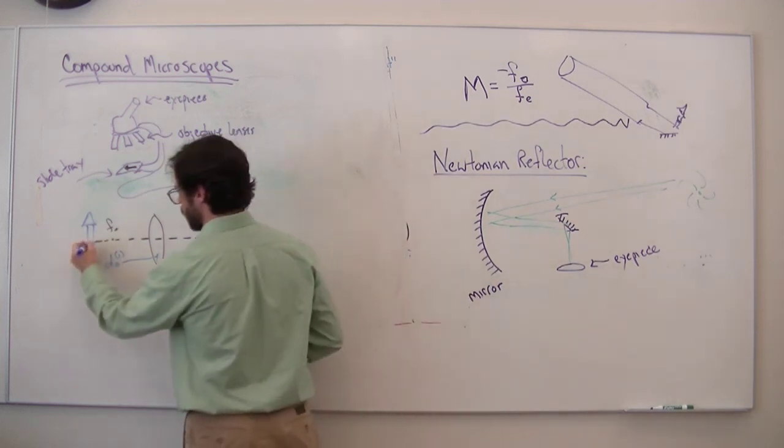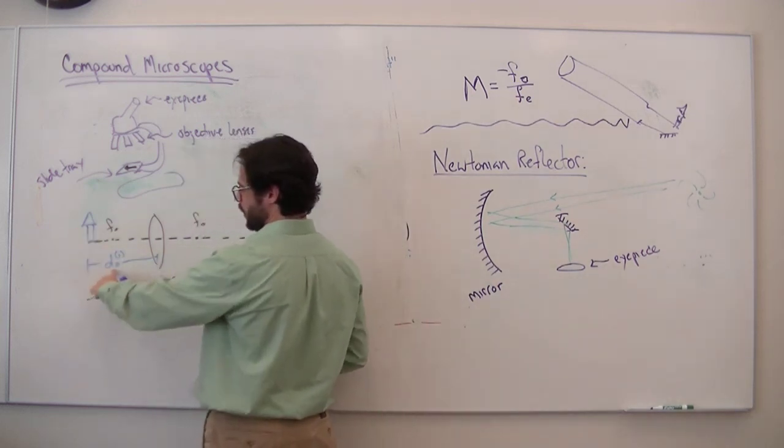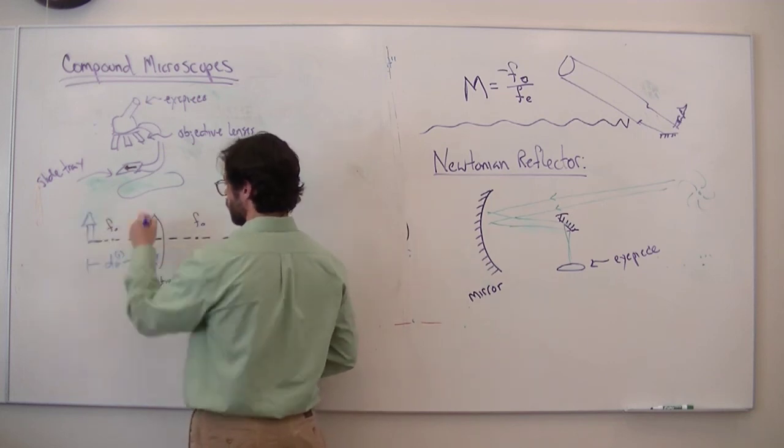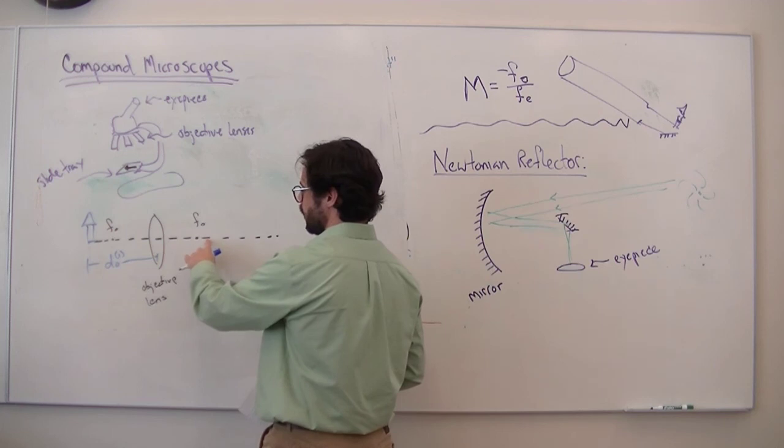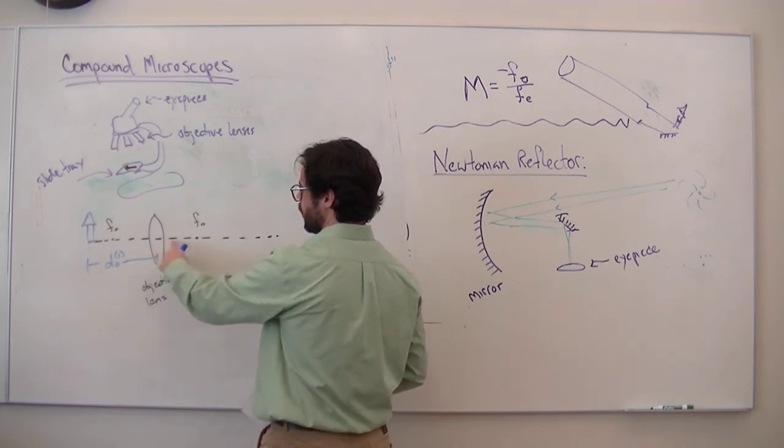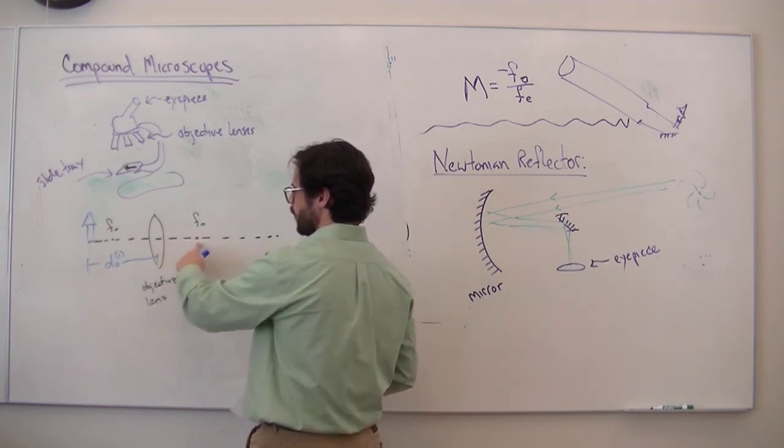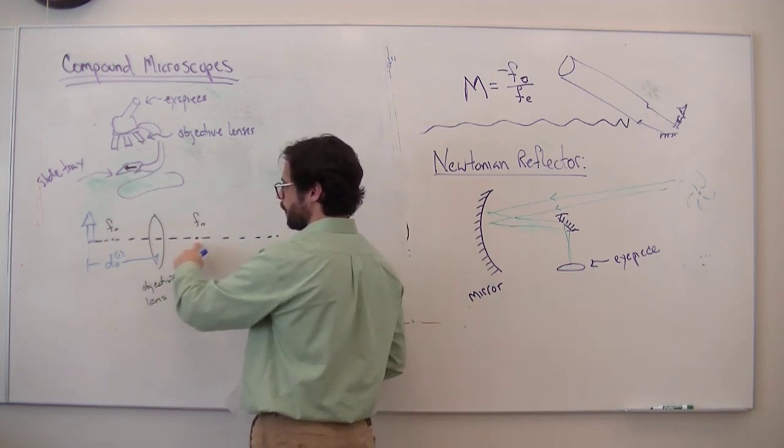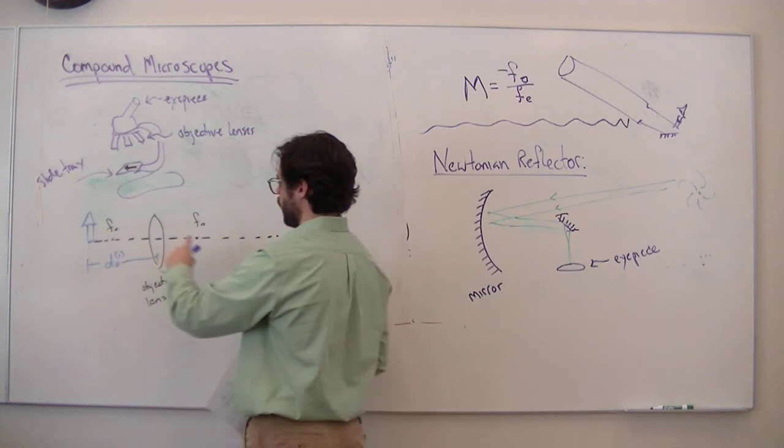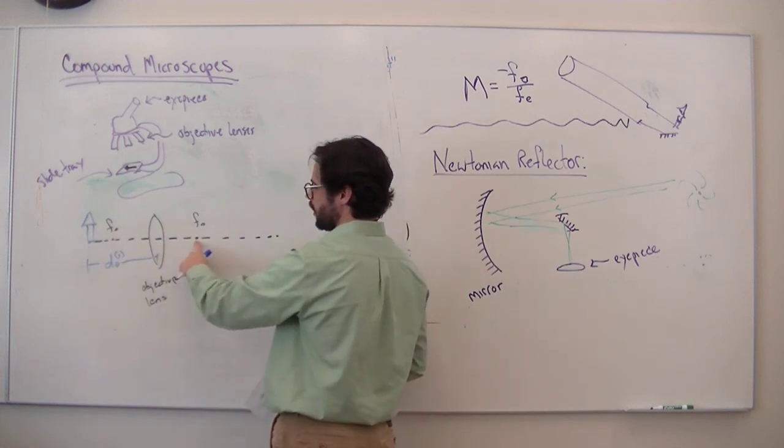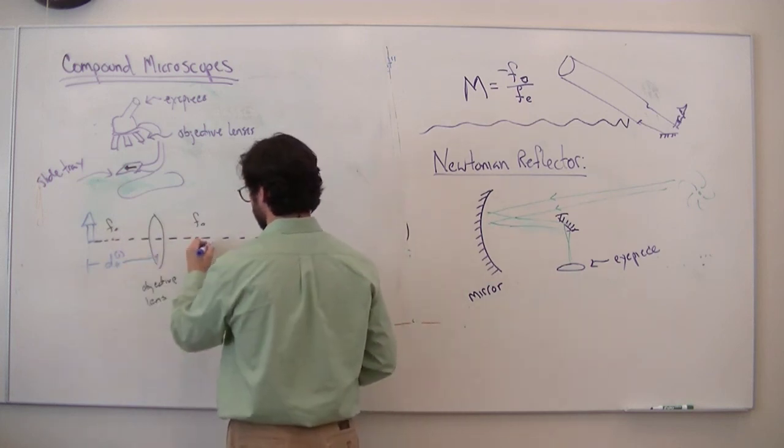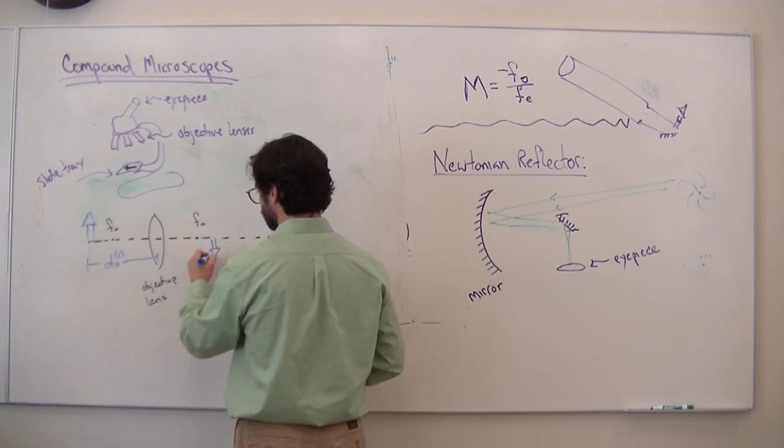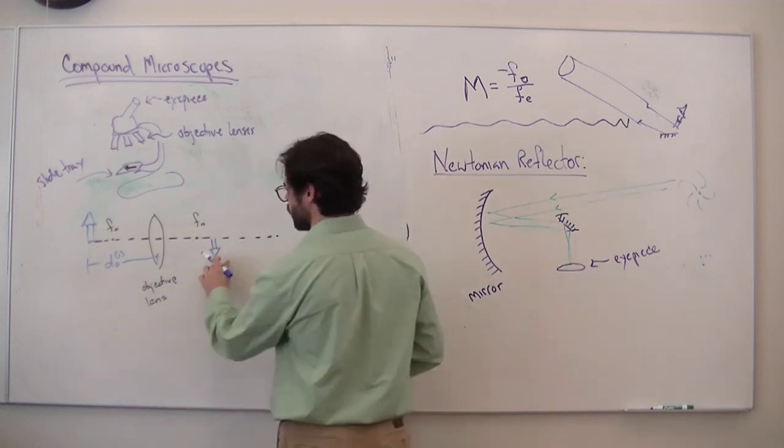And using the terminology we introduced when we talked about compound optical instruments in general, this would be the object distance before it interacts with the first lens. So this thing's going to go through. It's going to make an image, in this case, a real inverted image. But it's not going to be at the objective lens's focal length. So if it were at infinity it would make an image right here. But it's not. It's closer. So maybe it might make an object here, or an image there. So this would be DI1.